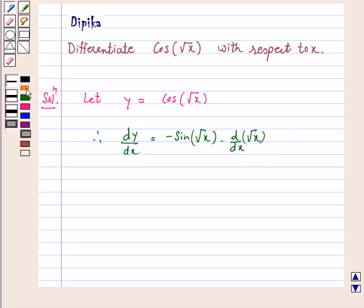So this is equal to minus sin root x into derivative of root x is 1 by 2 root x. So this is equal to minus sin root x upon 2 root x.